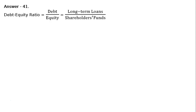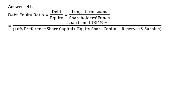We have to find out: debt-equity ratio is equal to debt upon equity, that is long-term loans upon shareholder's funds. That is equal to loan from IDBI — Industrial Development Bank of India — at the rate of 9%, divided by shareholder's funds, which includes 10% preference share capital plus equity share capital plus reserves and surplus. Securities premium reserve will not be taken into account because it is included in reserves and surplus.